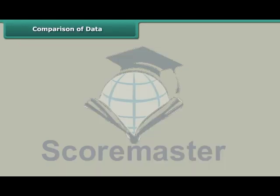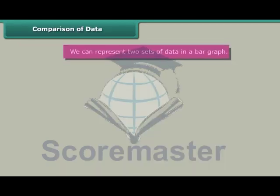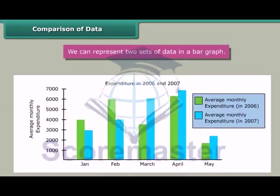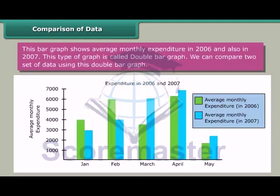Comparison of data. We can represent two sets of data in a bar graph. This bar graph shows average monthly expenditure in 2006 and also in 2007. This type of graph is called a double bar graph. We can compare two sets of data using this double bar graph.